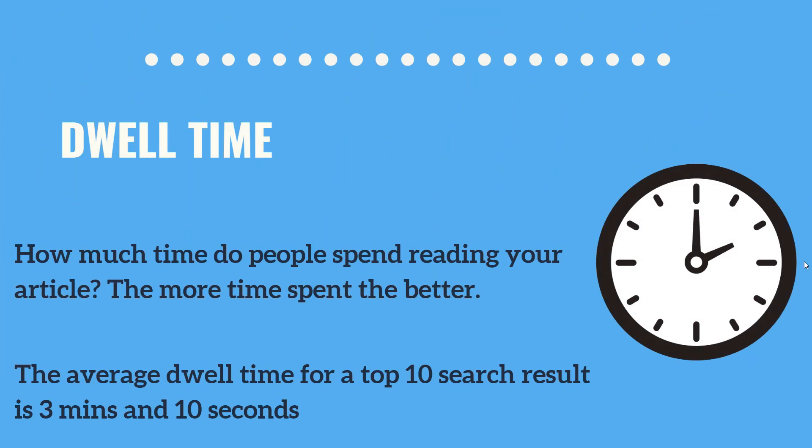Dwell time, as the name suggests, is basically the amount of time people spend reading a particular article. The more time spent, the better — it means the person enjoys the content, either because it's very engaging or very exhaustive with lots of facts. The average dwell time for a top-10 search result is about 3 minutes and 10 seconds. So if you can write articles that keep your readers engaged for at least 3 minutes 10 seconds, you are all good to go.